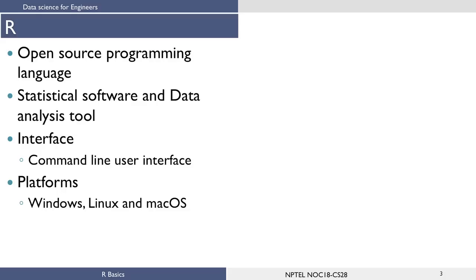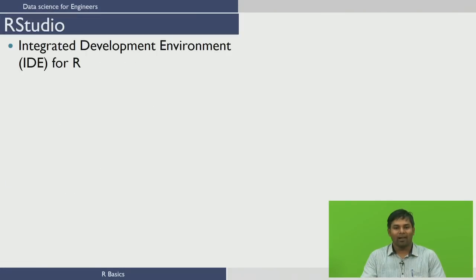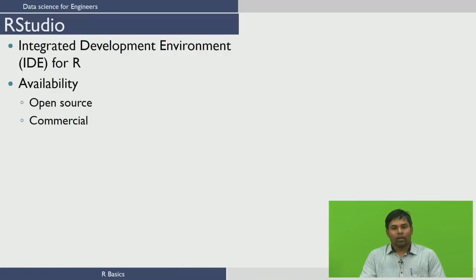Now let us see what is RStudio. RStudio is an integrated development environment for R. An integrated development environment is a GUI where you can write your codes, see the results, and also see the variables that are generated during the course of programming. RStudio is available as both open source and commercial software, and also as both desktop version and server version.